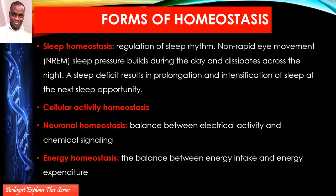We've also got cellular activity homeostasis, which talks about the various processes within cells. There is a balance — as we discussed in our lesson on enzymes — between energy-releasing exergonic processes and endergonic processes like photosynthesis that use energy. The cell tries to maintain a balance between these.